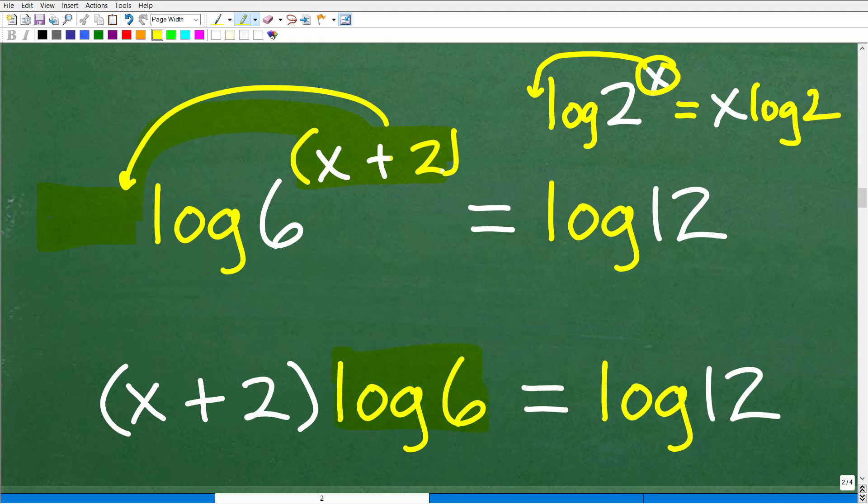All right, so we have x plus 2, all this in parentheses, right, because we're just bringing this whole group down here, times log 6 is equal to log 12. Now remember, log 6 now, this is just a decimal value, I can get a number, and I can get a number for this, and this is basic algebra.